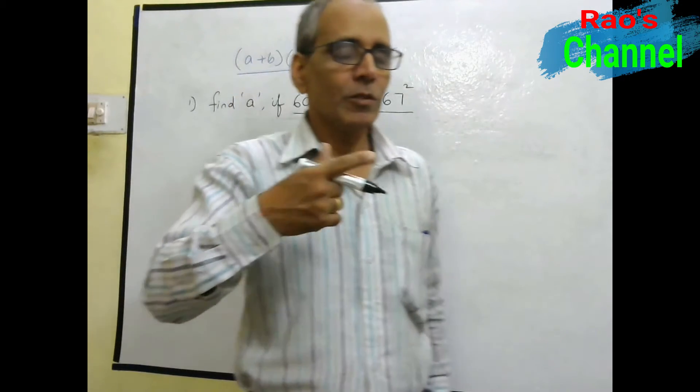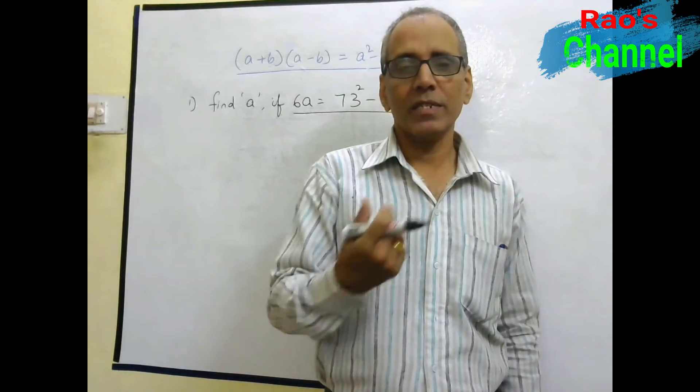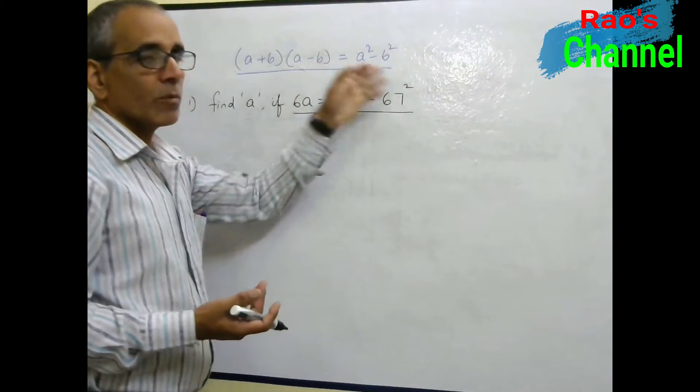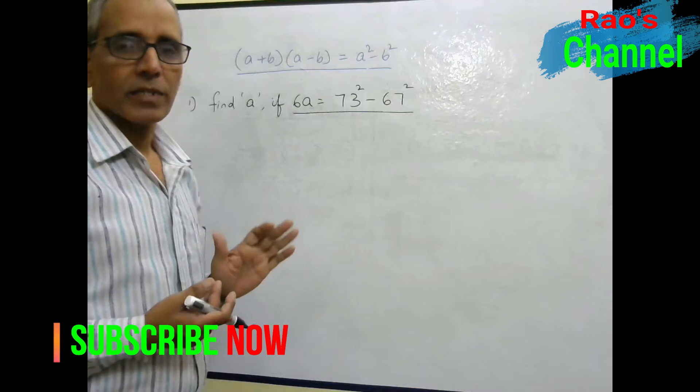You must be able to read the identity from both ways. That is, A square minus B square is equal to A plus B of A minus B. See both ways you are able to read and identify the identity.